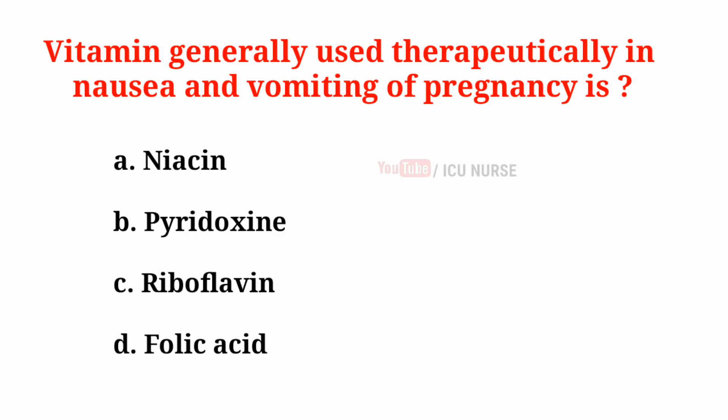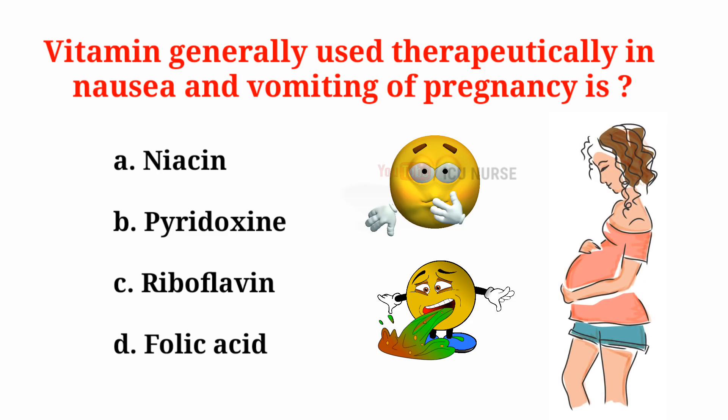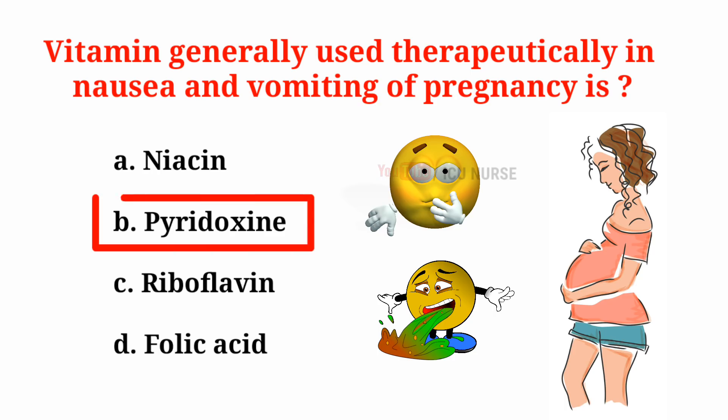The vitamin generally used therapeutically in nausea and vomiting of pregnancy is: A. Niacin, B. Pyridoxine, C. Riboflavin, D. Folic acid. And the correct answer is B. Pyridoxine.